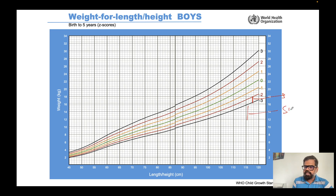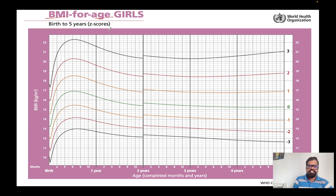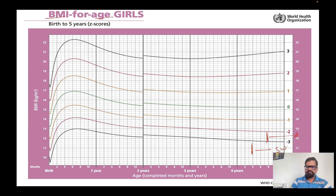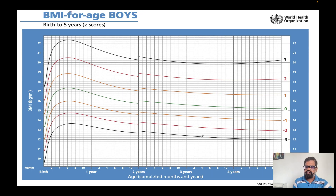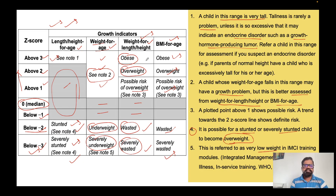We can also compare BMI with age. If the BMI plotting falls between minus two and minus three, it is wasting; below minus three is severely wasting. The same applies for boys. One important area I should mention is over-nutrition, which we assess using weight-for-height and BMI-for-age.